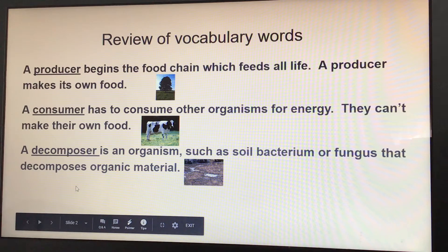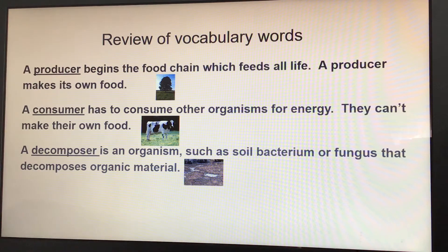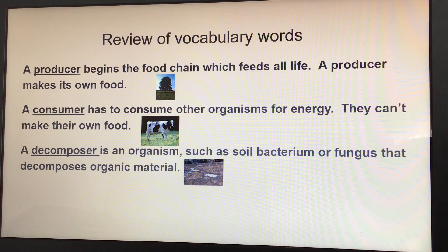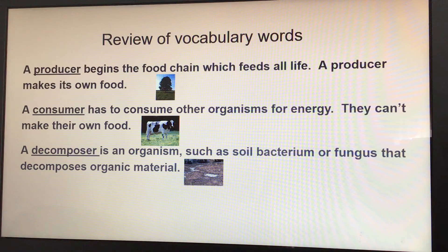A producer begins the food chain, which feeds all life. A producer makes its own food, such as a tree or grass. A consumer has to consume other organisms for energy — they can't make their own food, such as a cow.